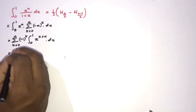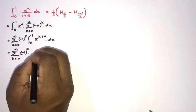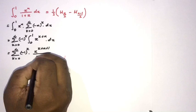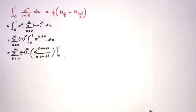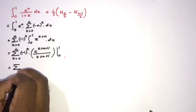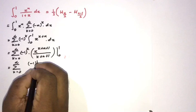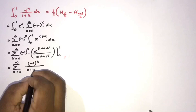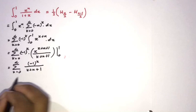Integrating, we get the sum from k equals 0 to infinity of (minus 1) to the k times x to the (k plus n plus 1) over (k plus n plus 1), evaluated from 0 to 1. Applying the limits, this gives the sum of (minus 1) to the k over (k plus n plus 1).